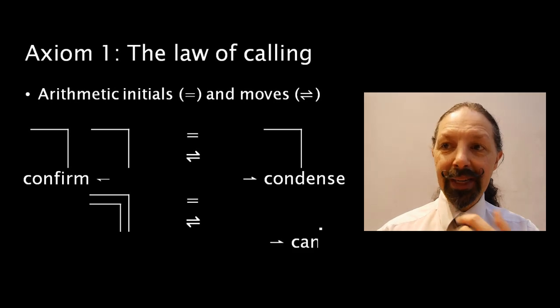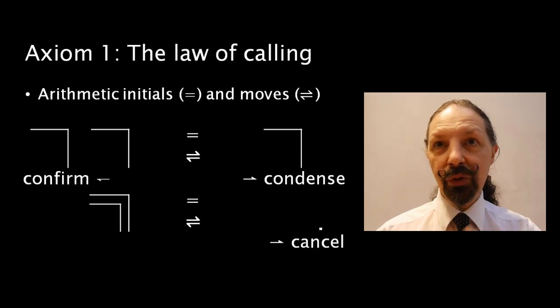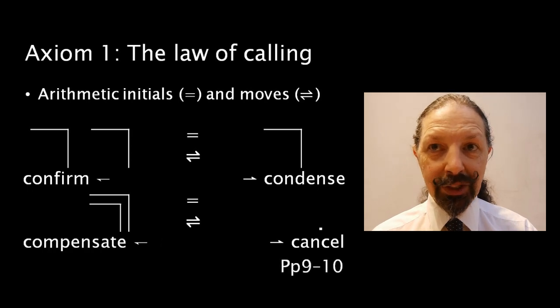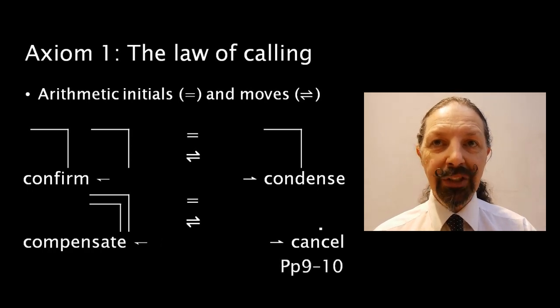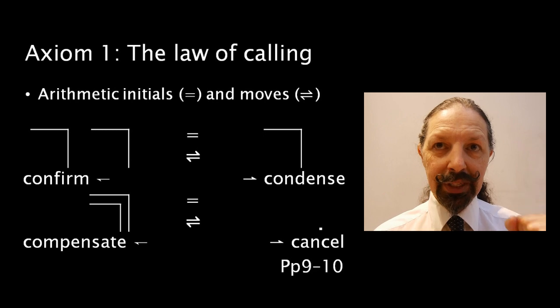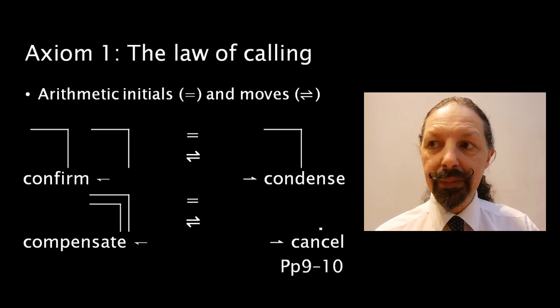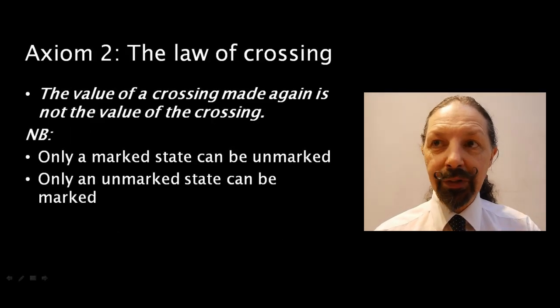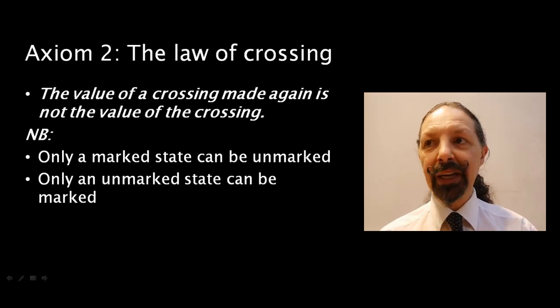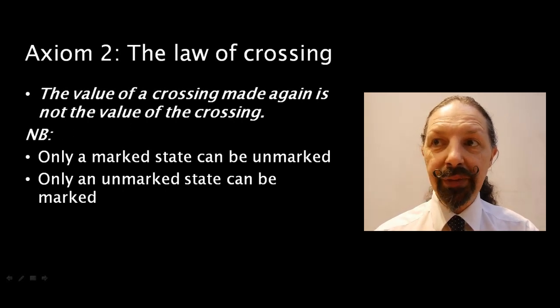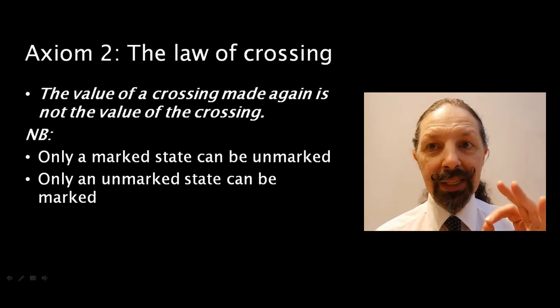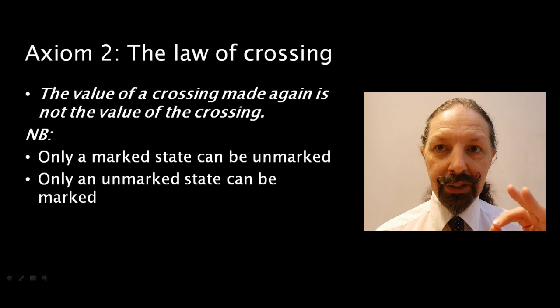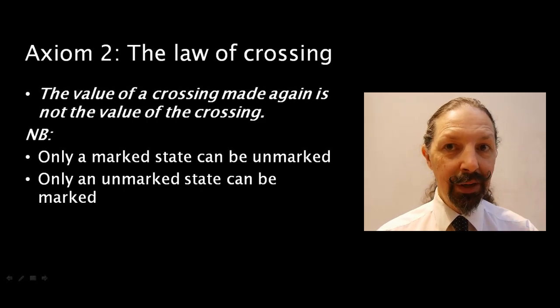And we've done cancellation, but we can also do compensation, where any blank space can have mark over mark put in it, because that is equivalent to the blank space. As for the law of crossing, I'm going to add something that was helpful to me to realize. Where Spencer Brown says the value of a crossing made again is not the value of the crossing, I found it helpful to remember that only a marked state can be unmarked, and only an unmarked state can be marked.